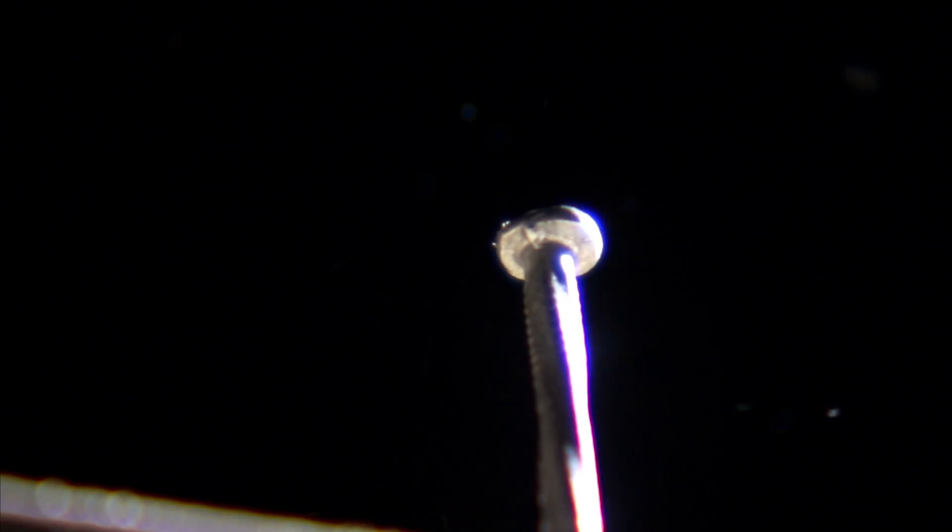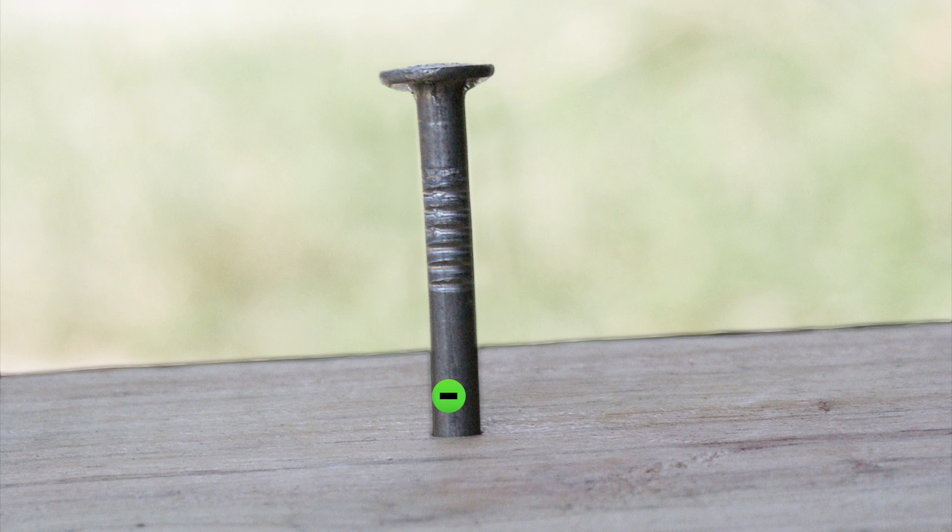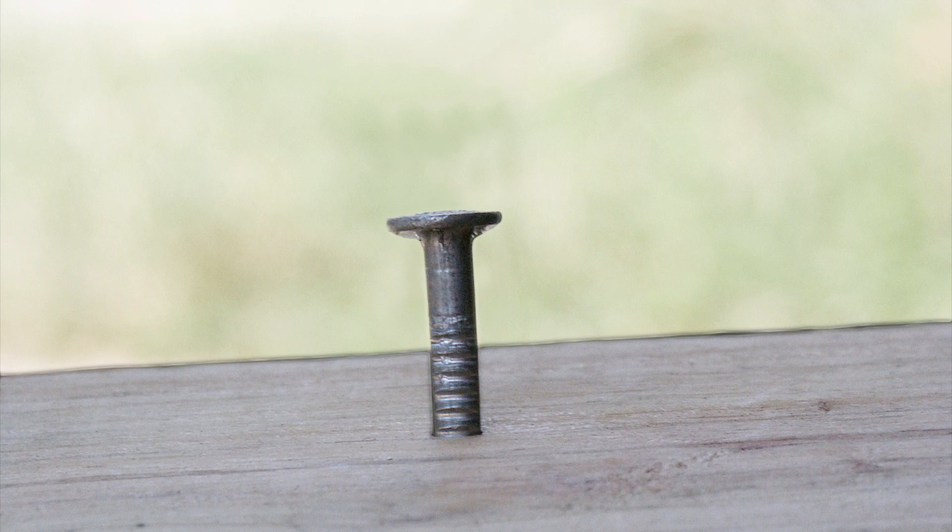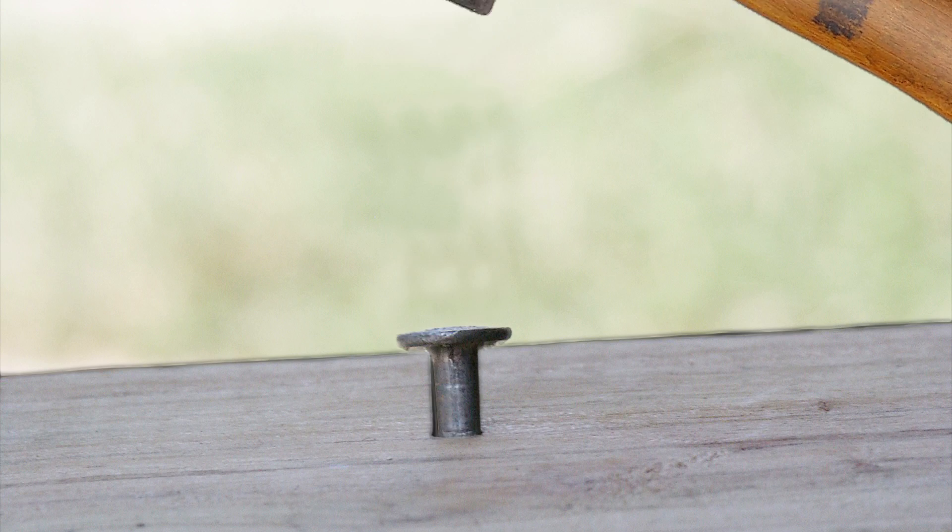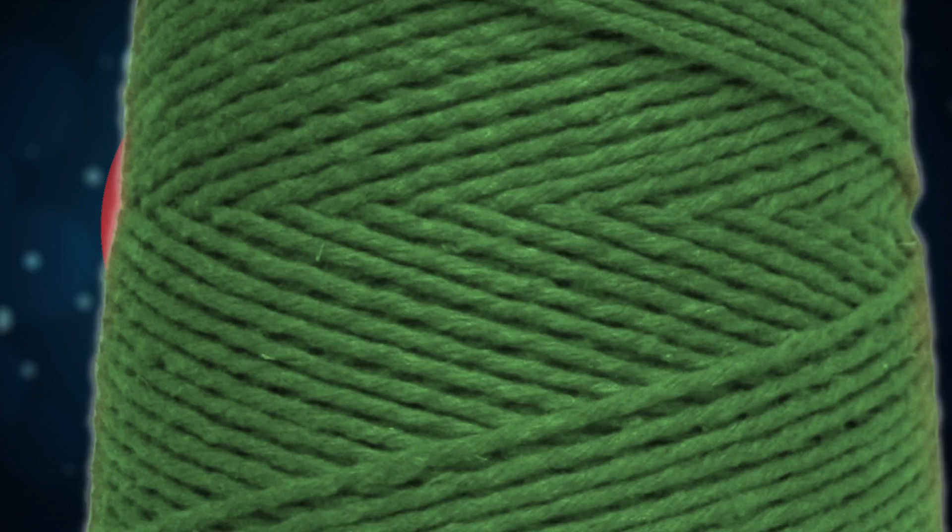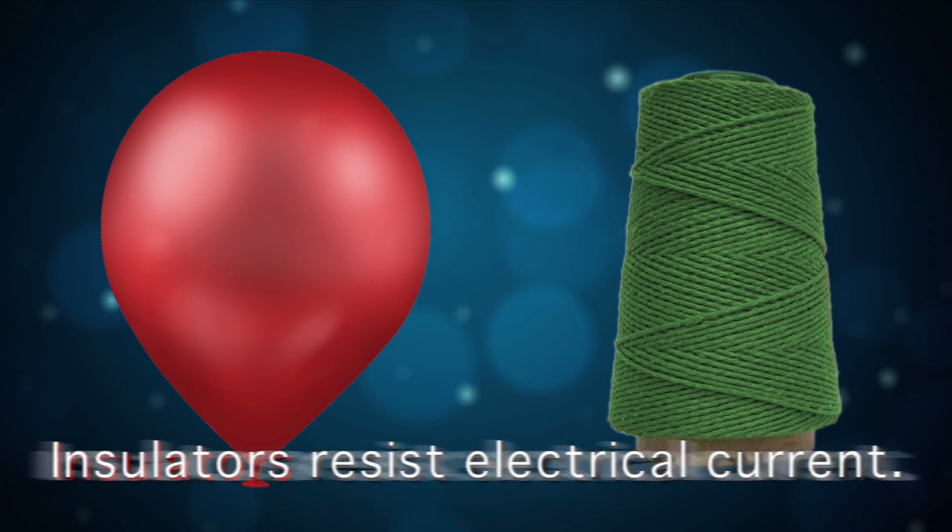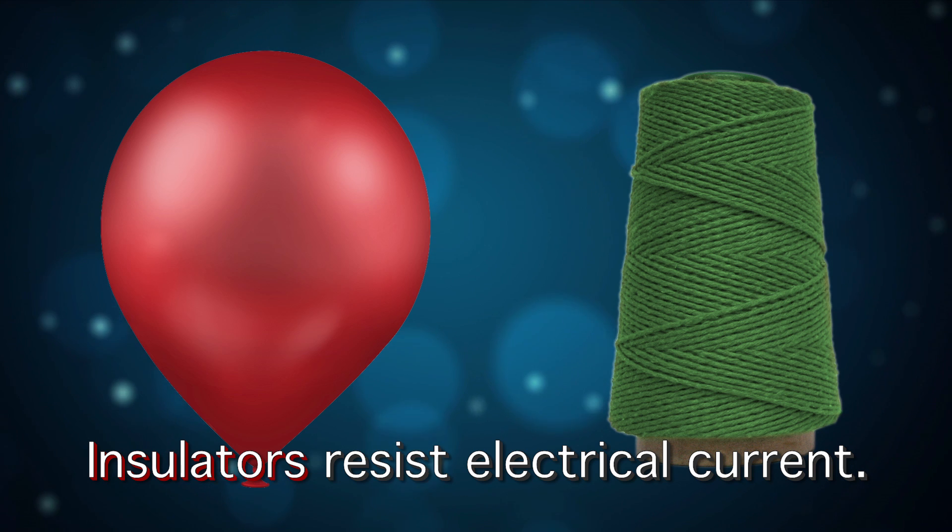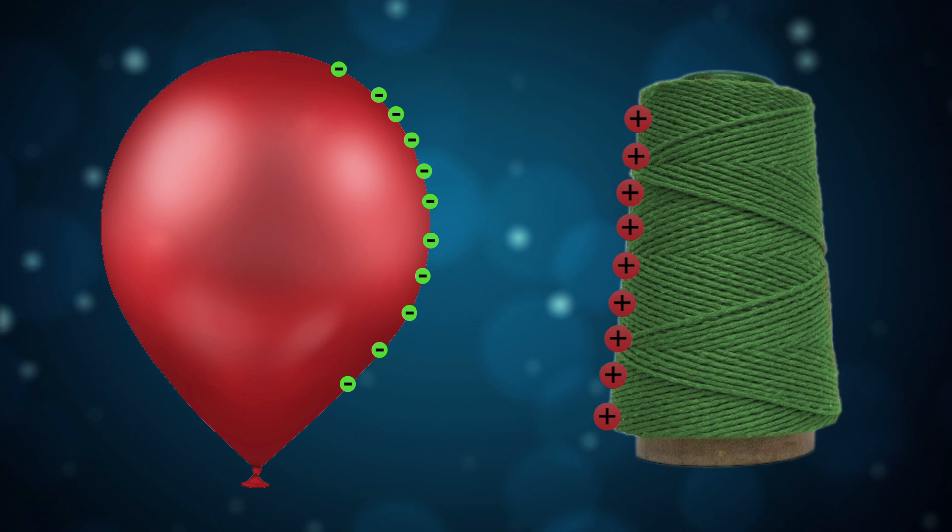When two materials come in contact and separate, electric current is transferred between the two materials. This allows for the two materials to remain neutral. However, if one of those materials is an insulator with a large amount of resistance to electric current, charged particles such as electrons or ions will build up on the surface of the materials, resulting in an electric charge.